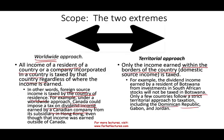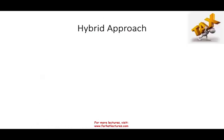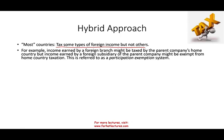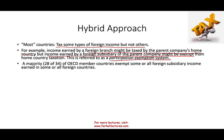Most countries don't go with either extreme — they use a hybrid approach, taxing some types of foreign income but not others. For example, income earned by a foreign branch might be taxed by the parent company's home country, but income earned by a foreign subsidiary may be exempt from home country taxation. This is referred to as the participation exemption system. In fact, 28 of the 34 OECD member countries exempt some or all foreign subsidiary income.